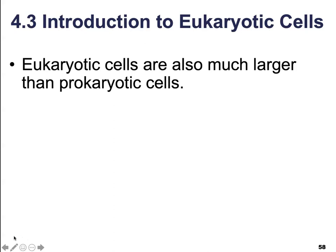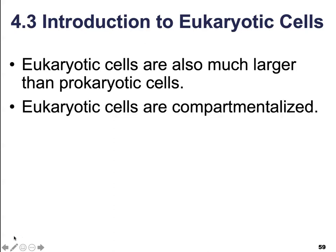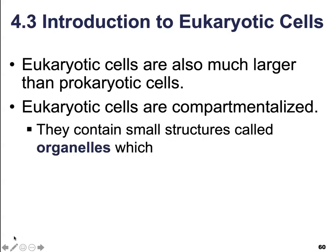Eukaryotic cells are actually going to be much larger than prokaryotic cells. Would you expect that this means they are going to be more efficient or less efficient than smaller bacterial cells? So they are much larger than prokaryotic cells; however, they are going to be compartmentalized. They're compartmentalized, which means they contain very small structures called organelles, which carry out specific functions and isolate certain reactions from other reactions to help maintain and increase efficiency within the cell.